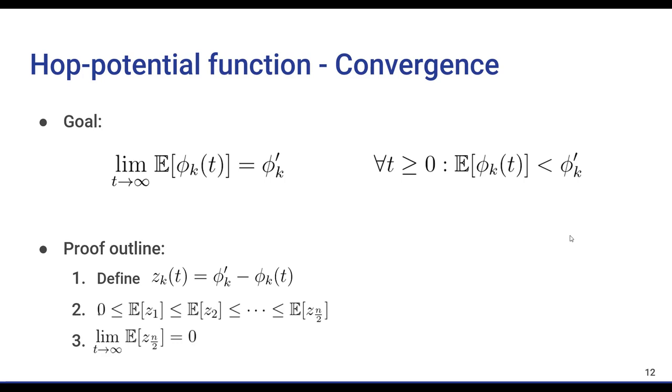We accomplish this in three steps. First, we define z_k at time t to be the difference between phi prime k and phi_k at time t. This comes from the fact that if we plug in both phi and phi prime into the transformation, and subtract them from each other, we can eliminate all the constant factors, and get a clean linear transformation between z values at time t plus 1 and at time t.